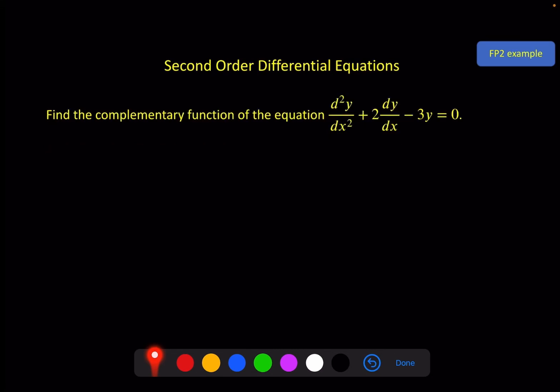So a quick example just to show how easy this is. Here we've got a coefficient of 1, 2, minus 3. So I take those out and I've got m² + 2m - 3 = 0. I solve this to get m equals minus 3 or m equals 1.